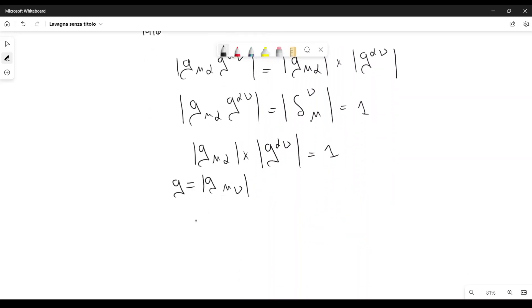Then we can also find the rule for the transformation of the determinants. G prime can be written like this, because it is the determinant of, by definition, D X mu over D X prime sigma, D X nu over D X prime tau, and here we have G mu nu. We go from the system characterized by the variable X mu to the system characterized by the variable X prime sigma.